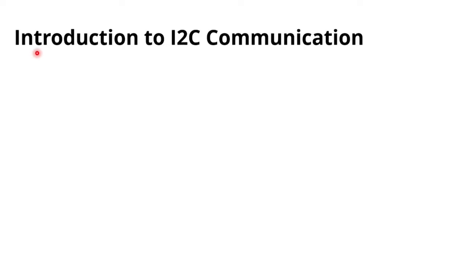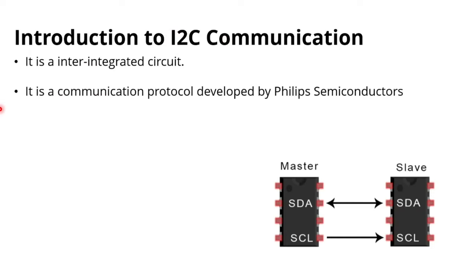Here we will see an introduction to I2C communication. It stands for Inter-Integrated Circuit — two I's, that's why we call it I2C or IIC. It is a communication protocol developed by Philips Semiconductor. This protocol uses two wires: one is a serial clock (SCL) and another is serial data (SDA). Using these two wires we can connect multiple masters and multiple slaves in a single network.